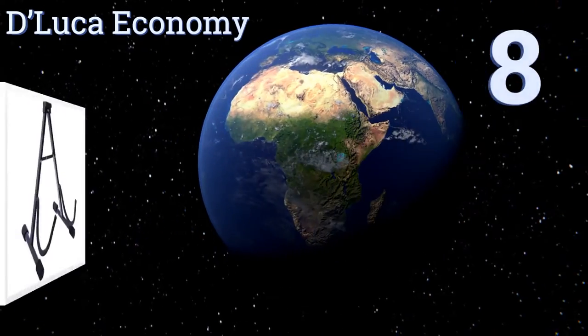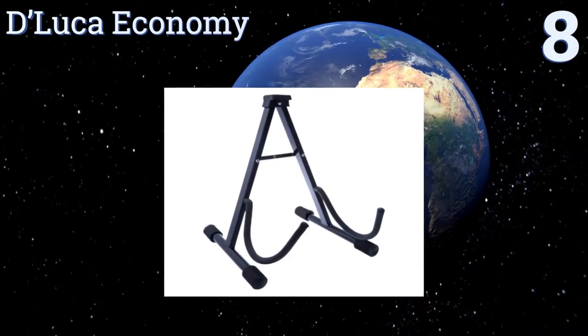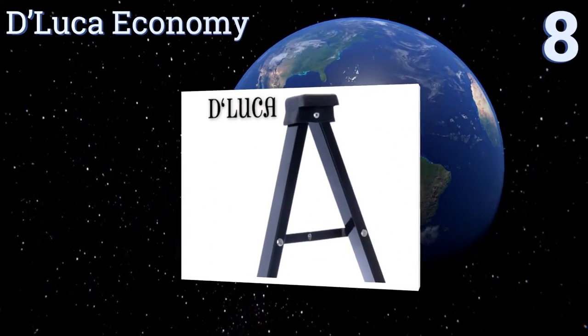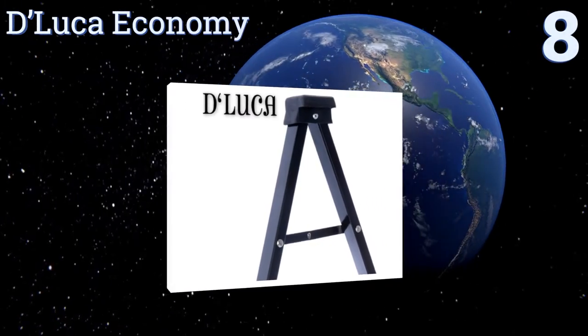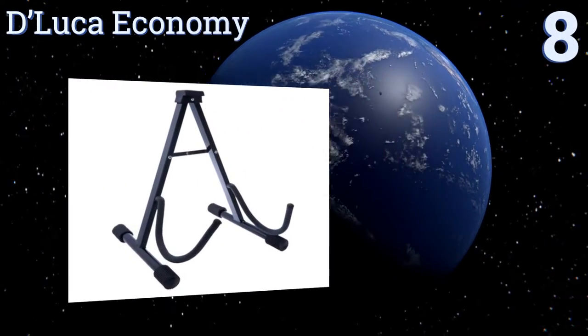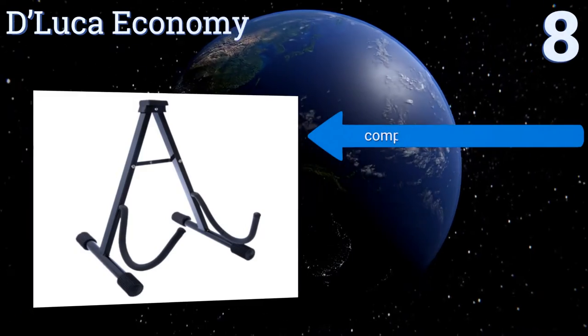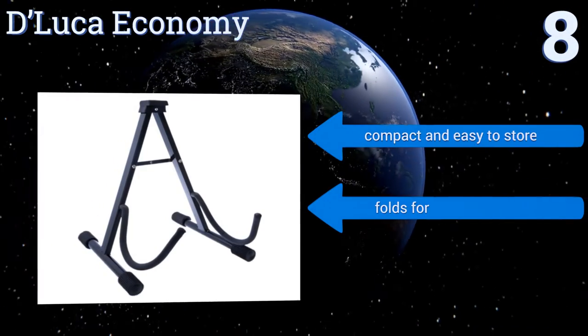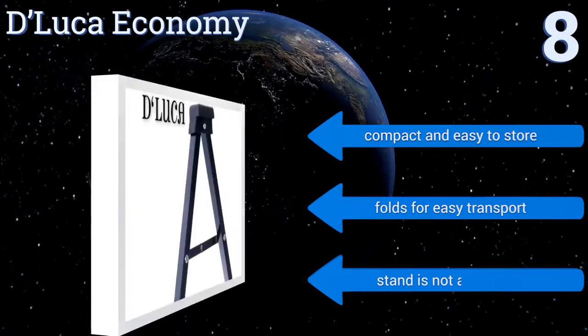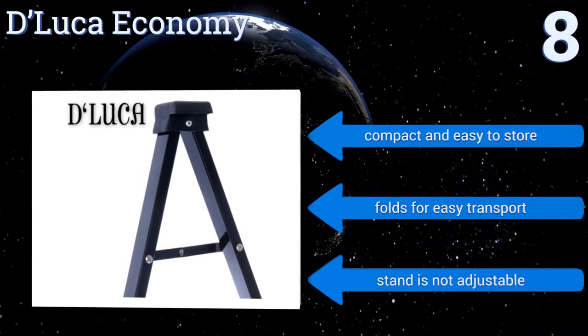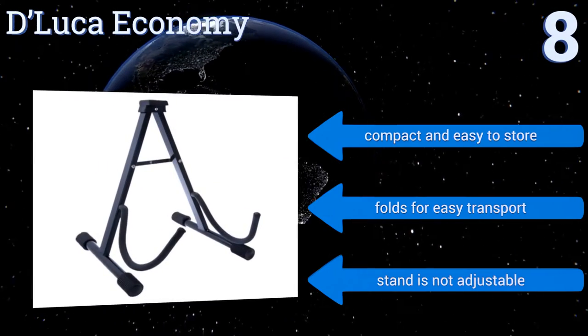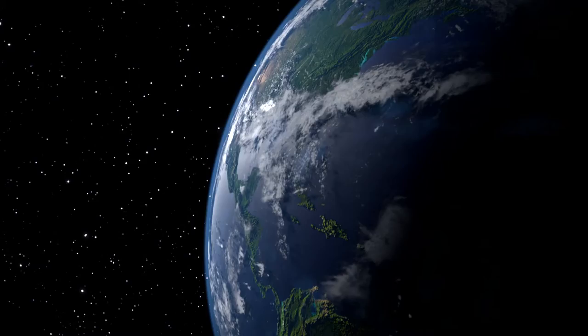Starting off our list at number eight, well built with strong metal, the D'Luca Economy is an affordable universal cello stand that works well for simple tasks like keeping the instrument secure from pets and children. Full-size cellos may require a little extra support. It's compact and easy to store and folds for easy transport, however it's not adjustable.